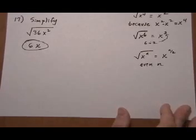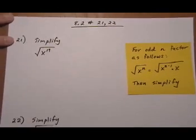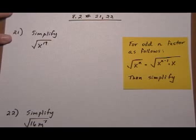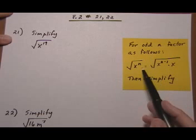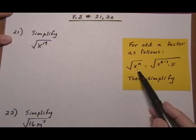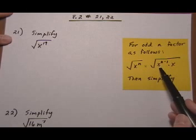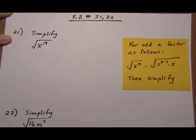Let's do some more — number 21. Here we have an odd power. What we're going to do for odd powers is break it into factors where we have an even power and then one left over. For odd n, the rule is: root x to the n equals root of x to the n minus 1, so subtract 1 from the exponent, and then have 1 left over. Then we go ahead and simplify it like we did the other ones.